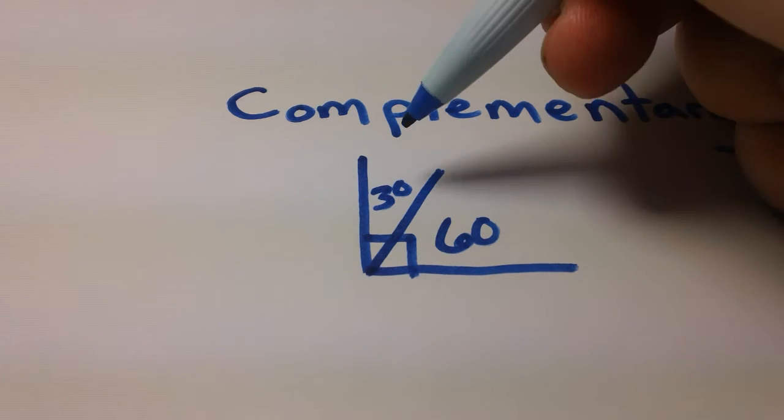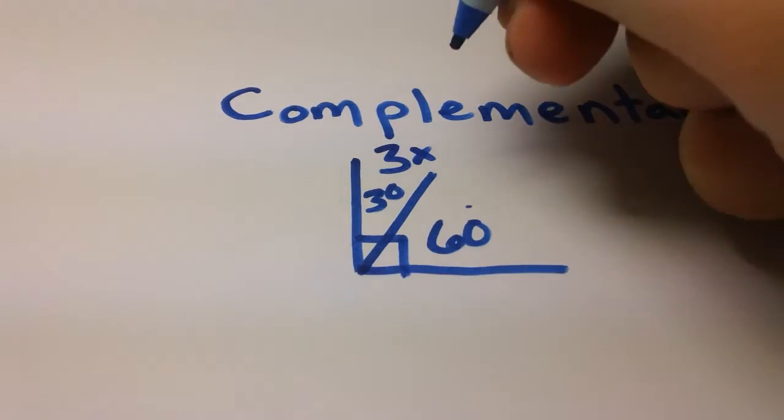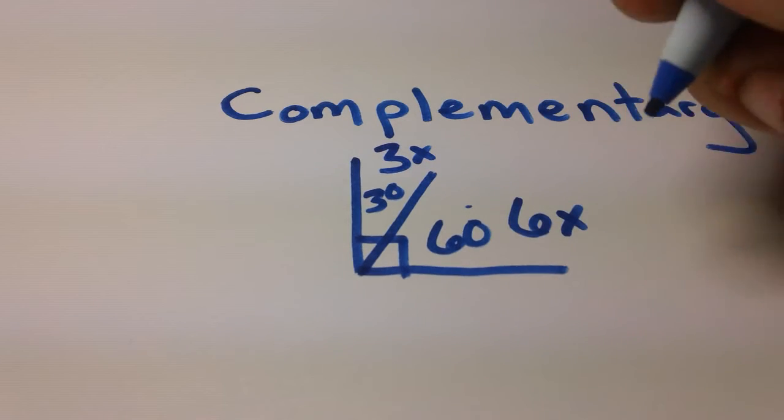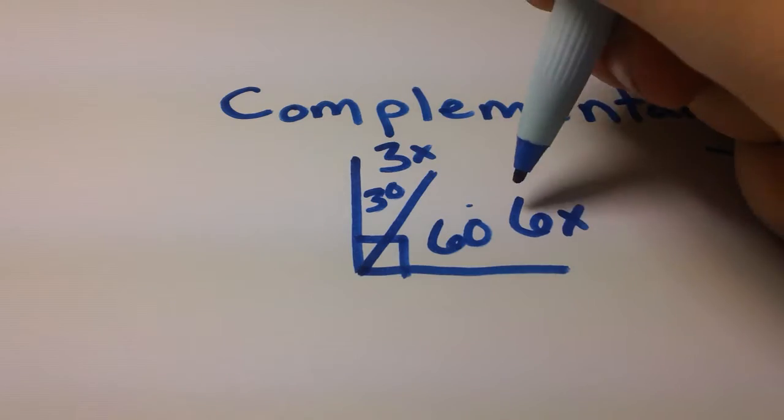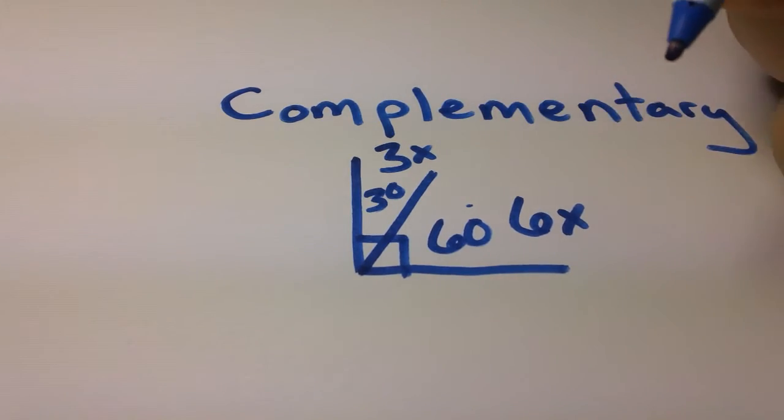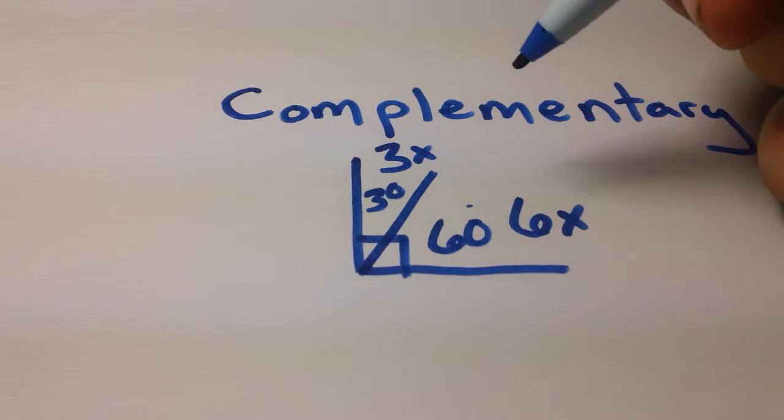Now it's not always going to be as simple as one being 30 and one being 60. Occasionally you may have some variables involved. It might be like 3x and 6x. Then you got to figure out what x is. Now that's not too bad. You know these two angles combine to form 90 degrees. Together that's what they form.